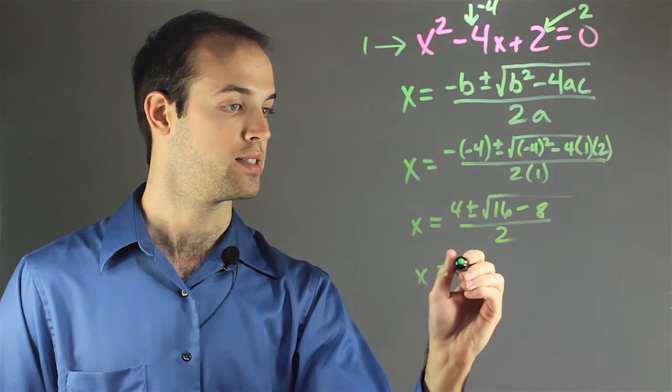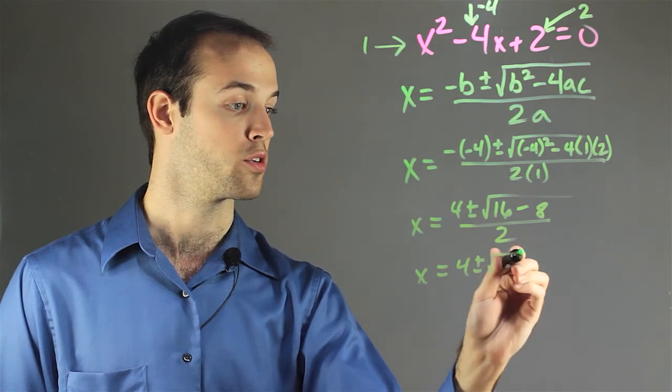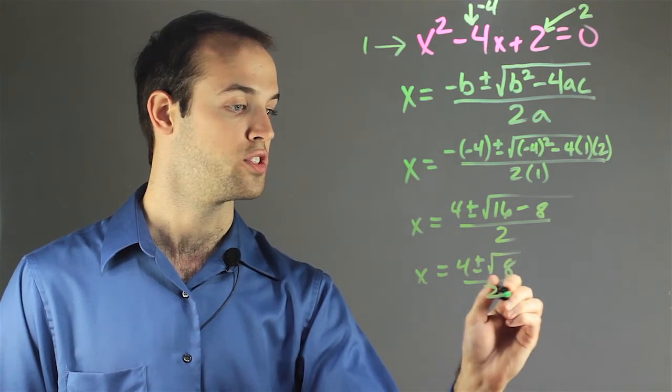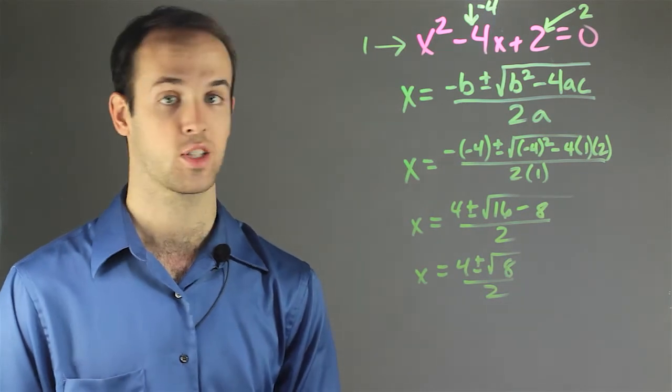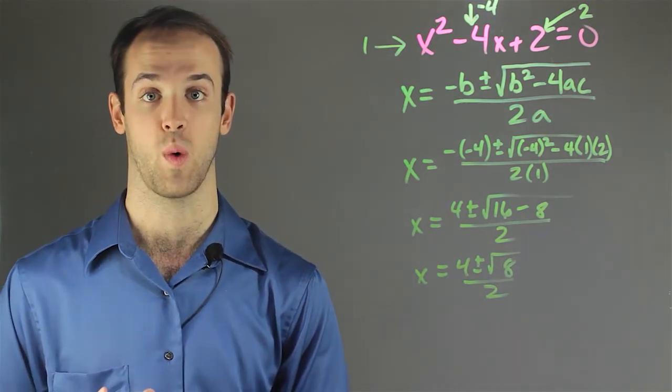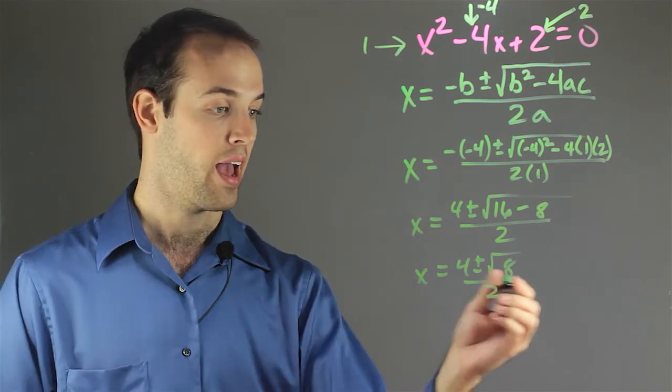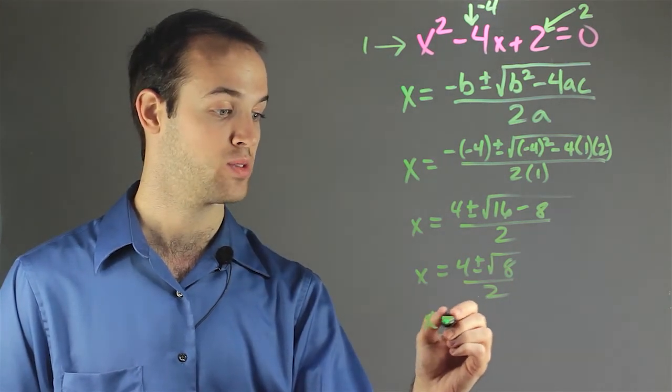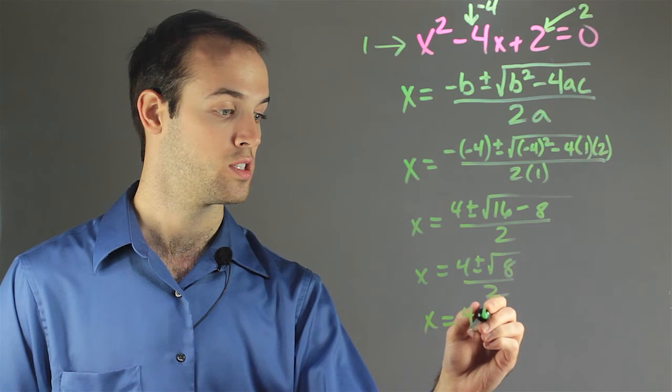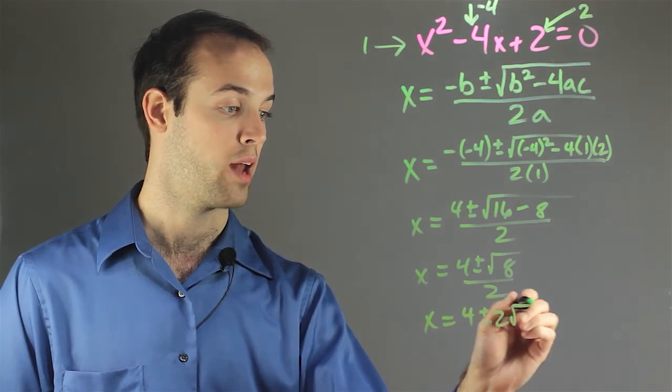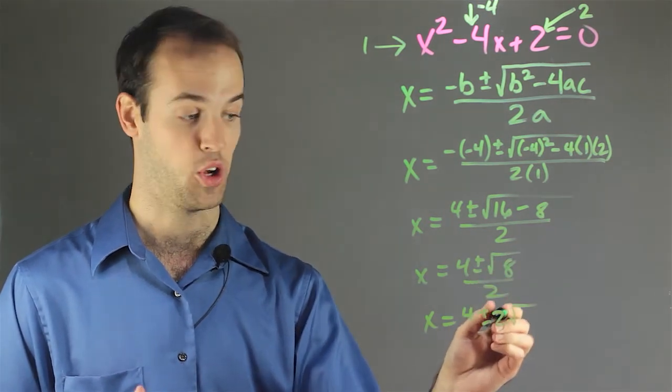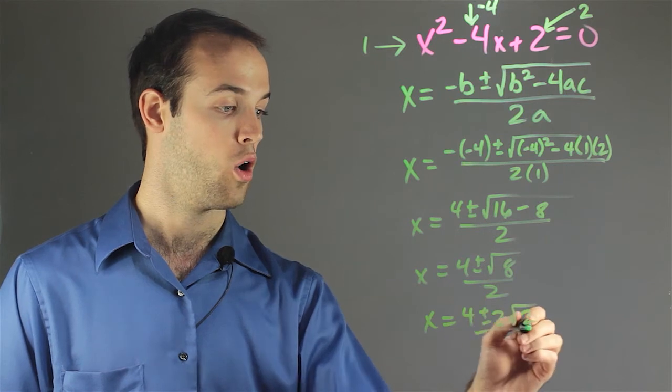And then I have x is equal to 4 plus or minus the square root of 8 over 2. Now I can simplify the square root of 8 by pulling out the perfect square that it has embedded in it, which is a 4, and the square root of 4 is 2. So on the outside, it's going to be a 2. So 4 plus or minus 2, and what's left inside is 2, over 2.